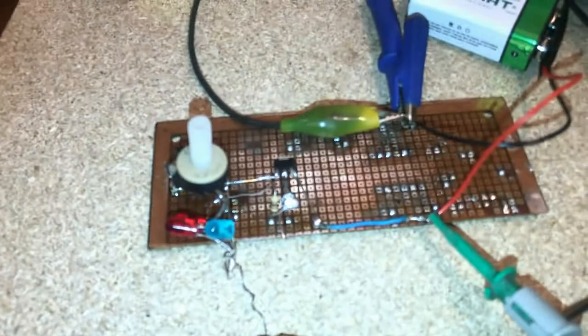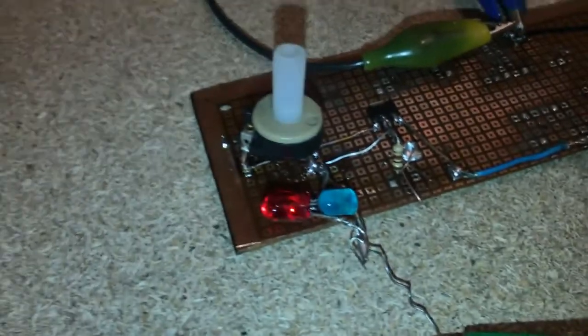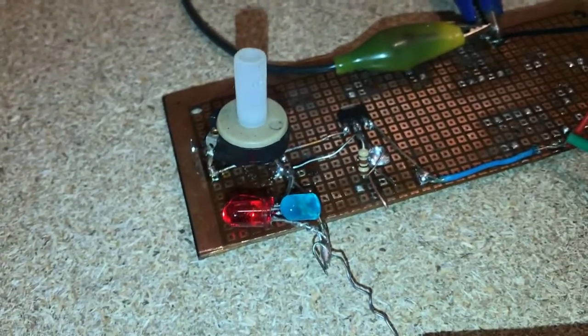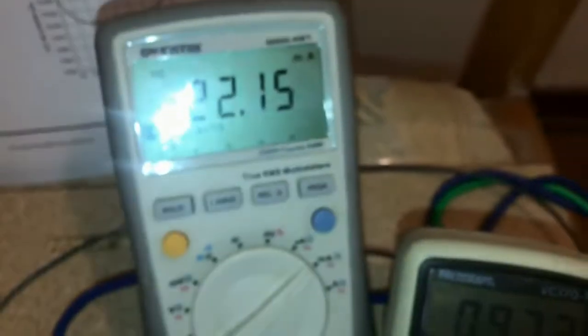I want to know exactly what's going on with the maximum amount of current. The LED is going to be on with 22 milliamps maximum.